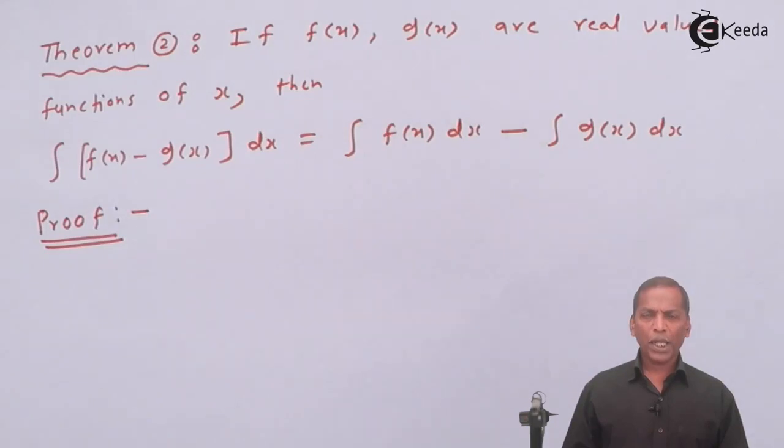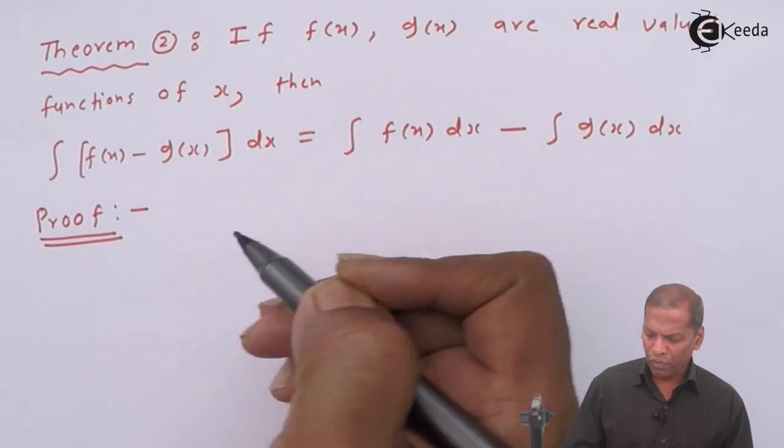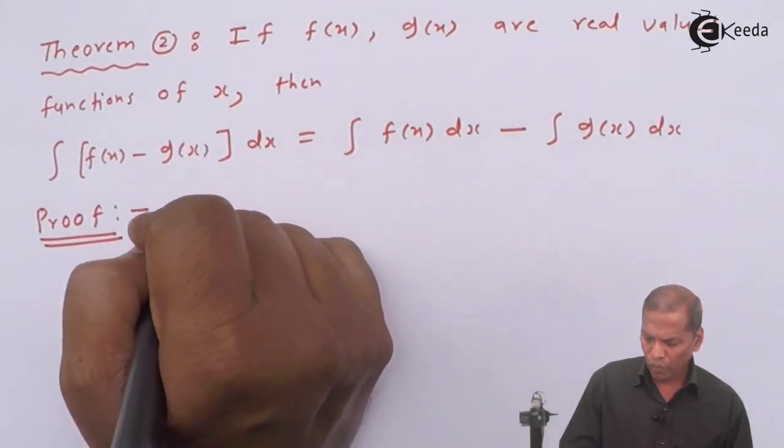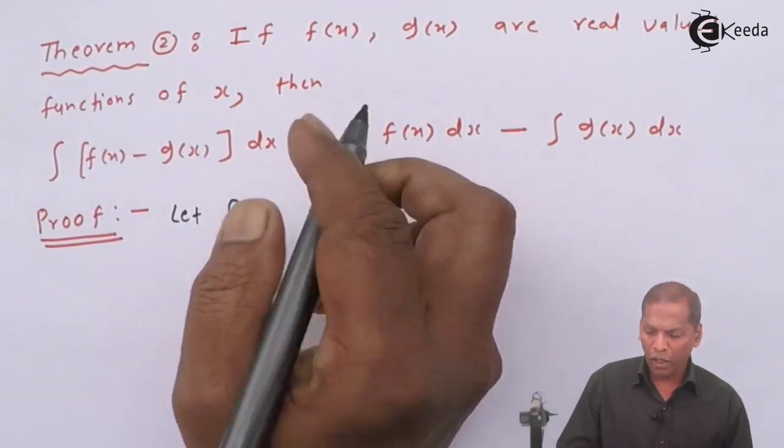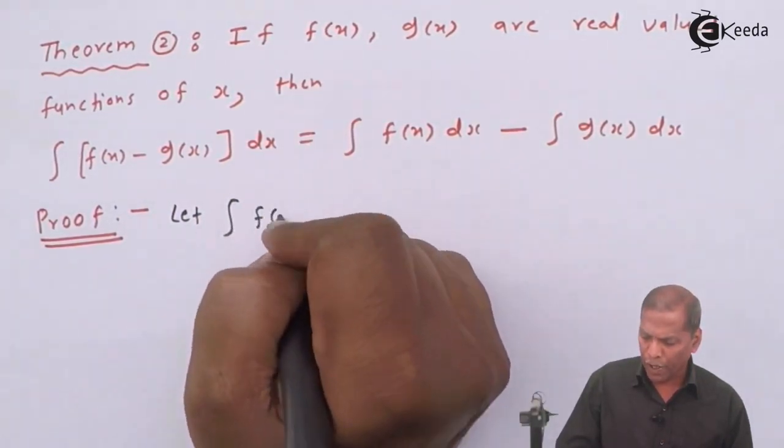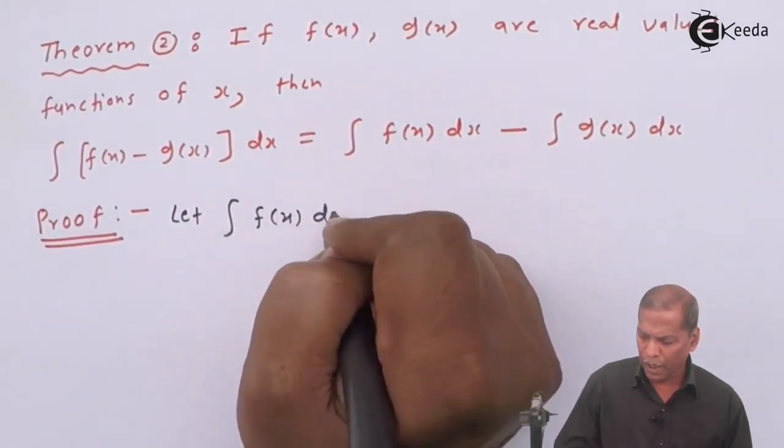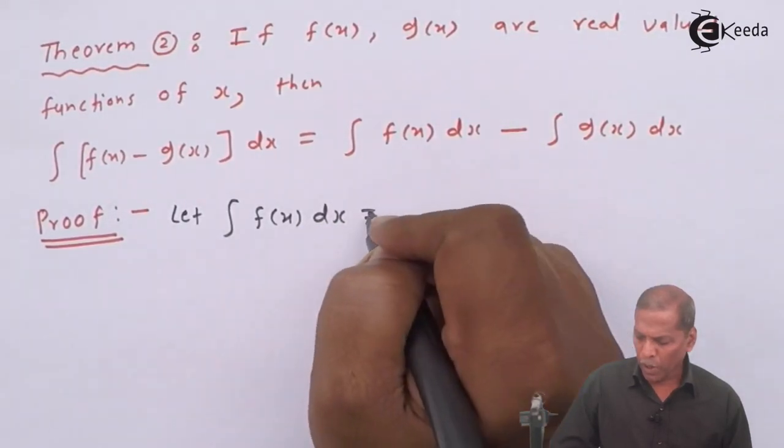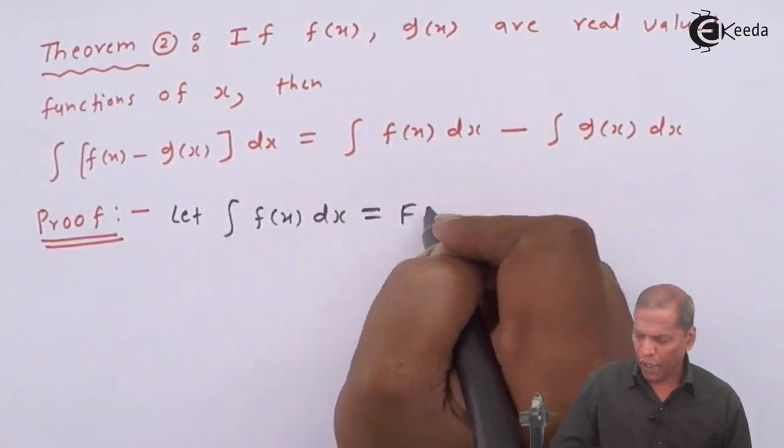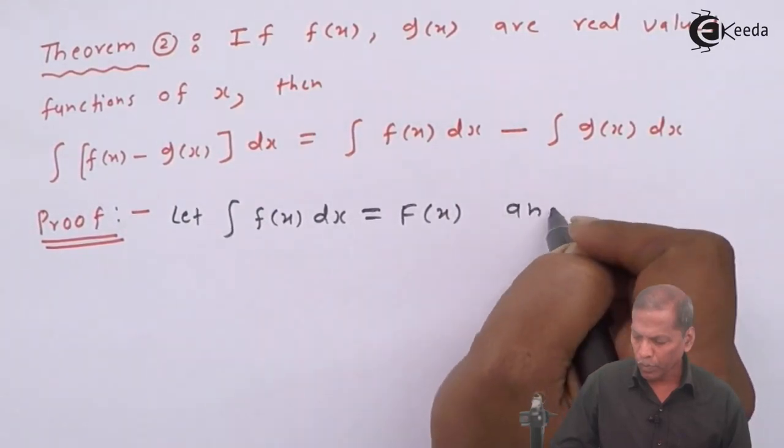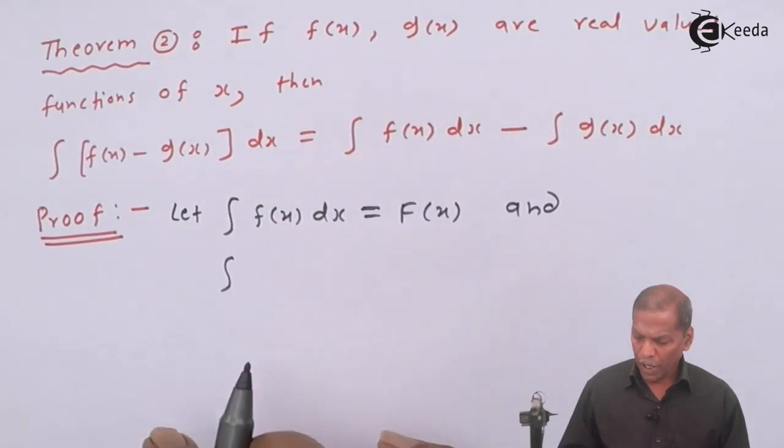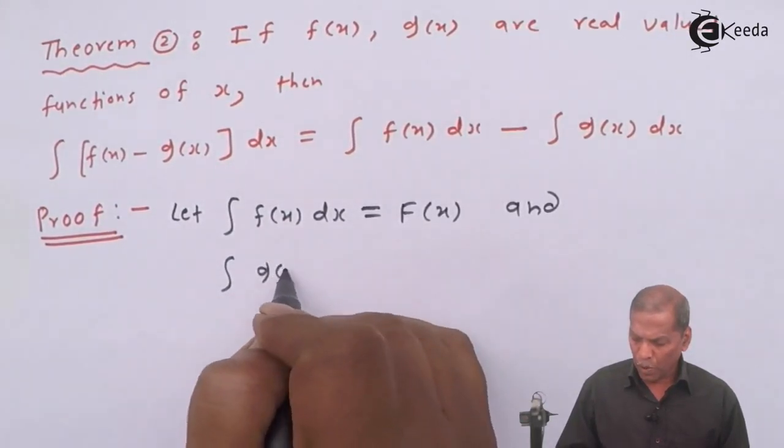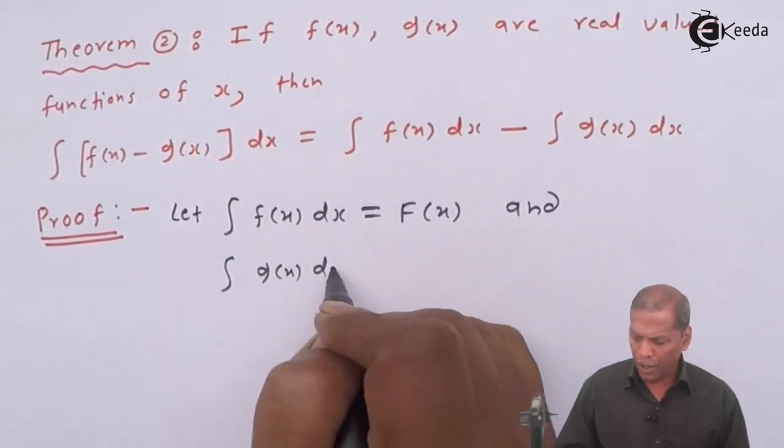Now let's see the proof. First of all, we start with: let integral f(x) dx equal to capital F(x), and integral g(x) dx equal to capital G(x).